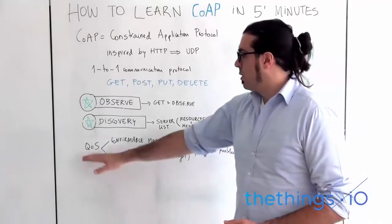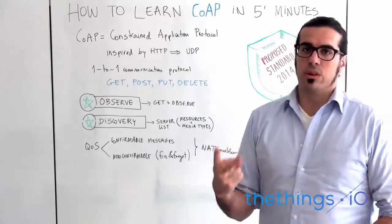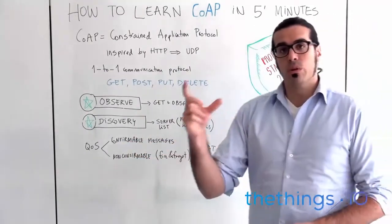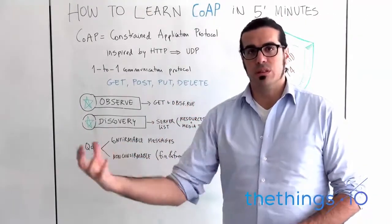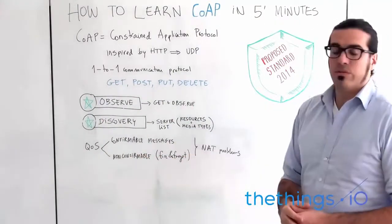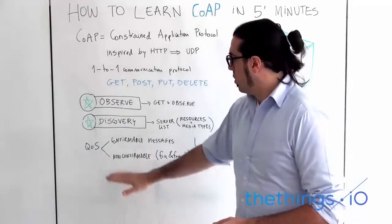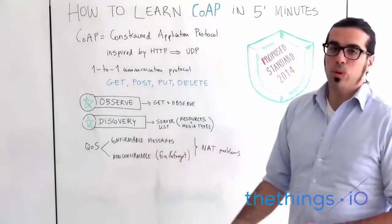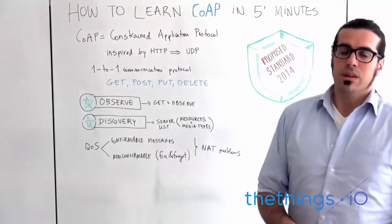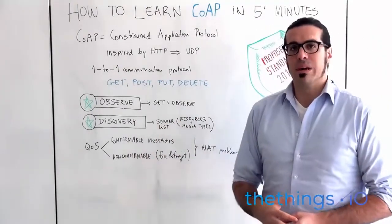Finally, for quality of service in CoAP, there are two different options. The first is the confirmable message: because CoAP is over UDP and you don't know if a message is being received, you can request confirmation that the message has been received. The second is non-confirmable, which is like in MQTT — fire and forget — so you don't care if the other party received the message or not.